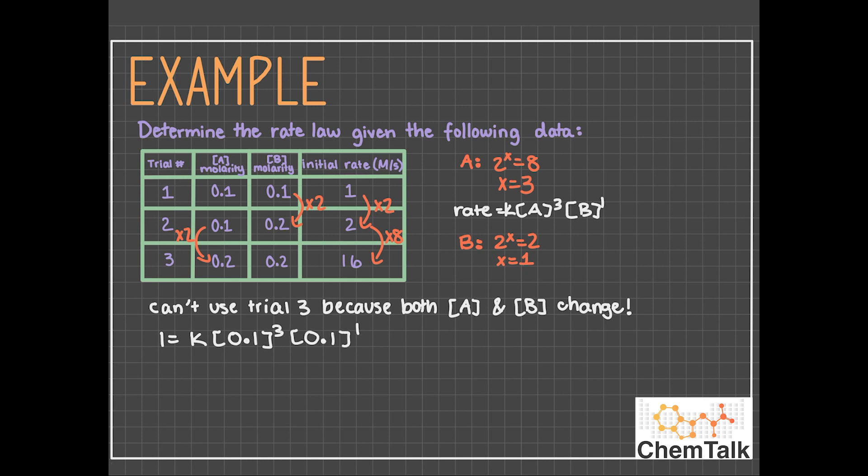Now, we are not done with this problem yet. We still need to determine the value for K, the constant. We do this by substituting the values from any trial into the equation. So we can pick trial 1, and write A's concentration as 0.1, B's as 0.1, and the rate as 1.